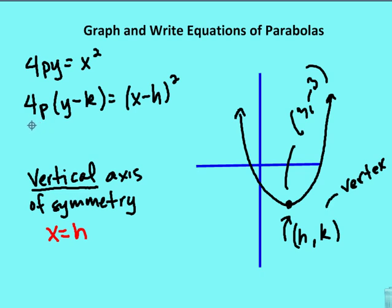The translated parabola equation is: 4p times (y minus k) is equal to (x minus h) squared. When the x value is squared, the axis of symmetry is vertical. The axis of symmetry is the variable being squared set equal to h. h and k are just the x and y coordinates, respectively, for the vertex of the parabola.